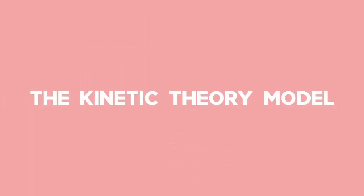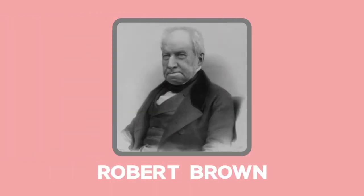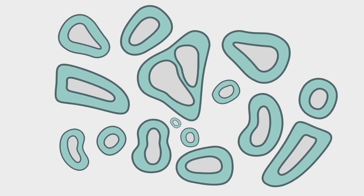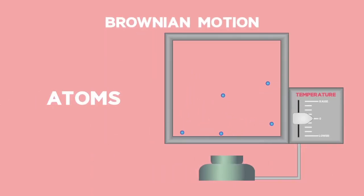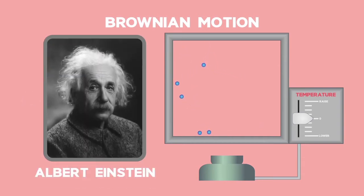In this video we are going to revisit the kinetic theory model. Robert Brown first observed pollen particles moving around very erratically under a microscope. The term Brownian motion was given to the particles that would be confirmed to be atoms in a famous paper in 1905 by none other than Albert Einstein.